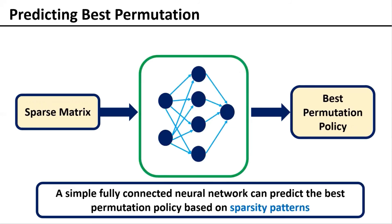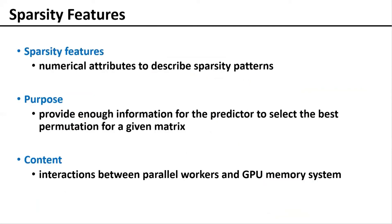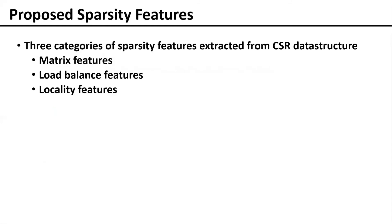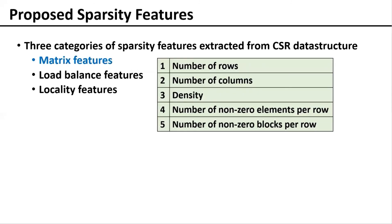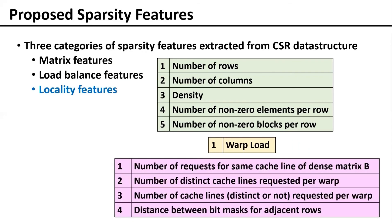What we propose is a simple predictor — a small, fully connected neural network — that can accomplish this goal based on the sparsity patterns. We introduce sparsity features, which are numerical attributes extracted from CSR to describe sparsity patterns. These features abstract the interactions between parallel workers and the GPU memory system. Our proposed features come in three categories: matrix features that summarize generic information like size and density; load balancing features that are stats derived from the warp load metric across different warps; and locality features that summarize access patterns by numerical attributes such as number of cache lines requested.